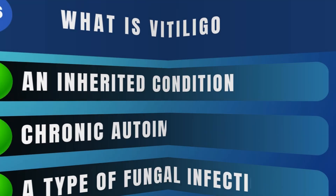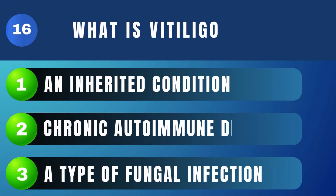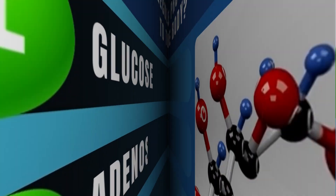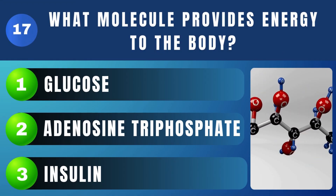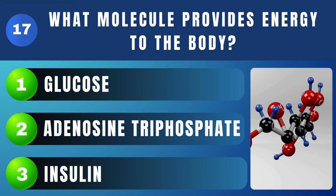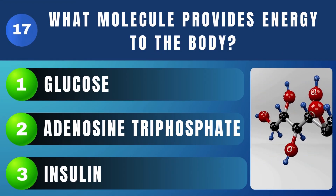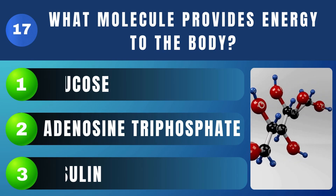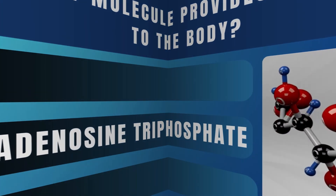What is vitiligo? Chronic Autoimmune Disorder. What molecule provides energy to the body? Adenosine Triphosphate.